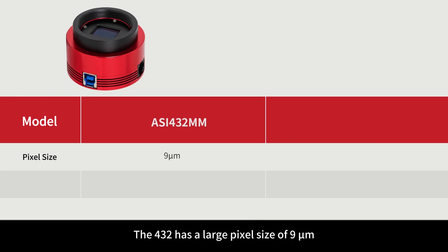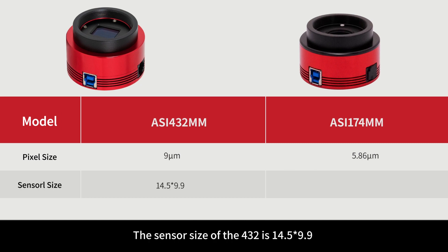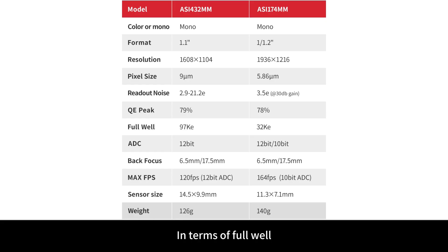The ASI-432 has a large pixel size of 9 microns while the ASI-174 has a pixel size of 5.86 microns. The sensor size of the ASI-432 is 14.5 x 9.9mm and the resolution is 1608 x 1104. The sensor size of the ASI-174 is 11.3 x 7.1mm and the resolution is 1936 x 1216.